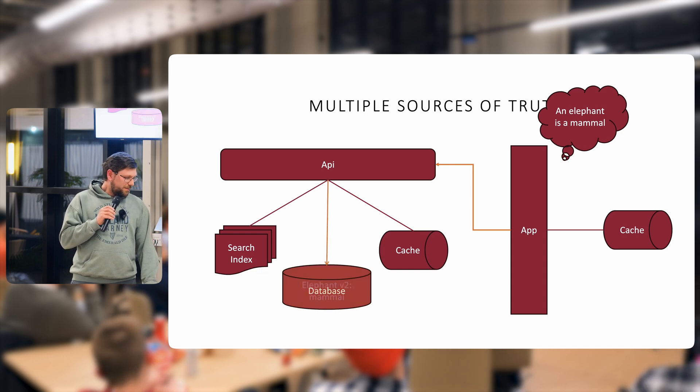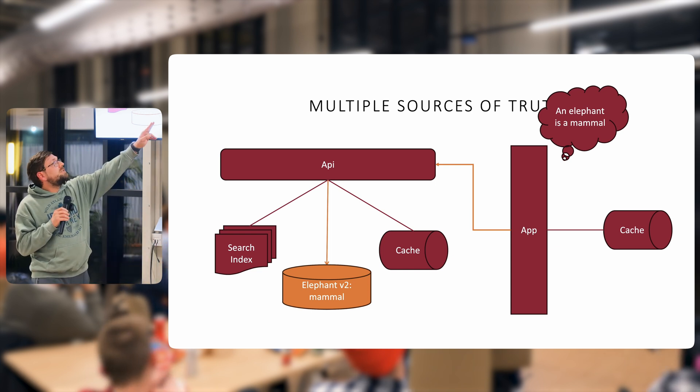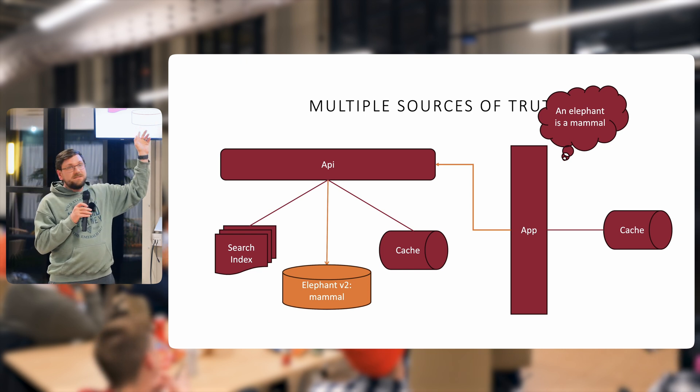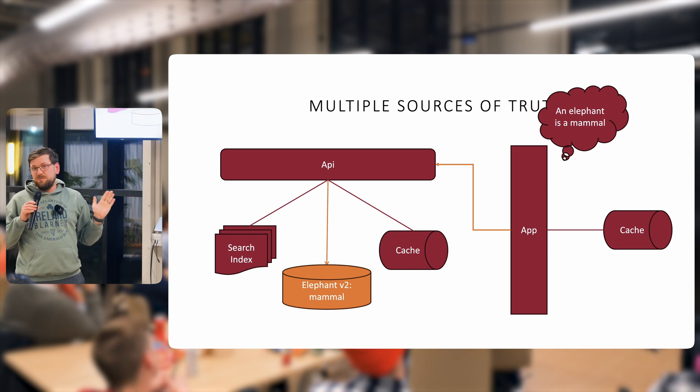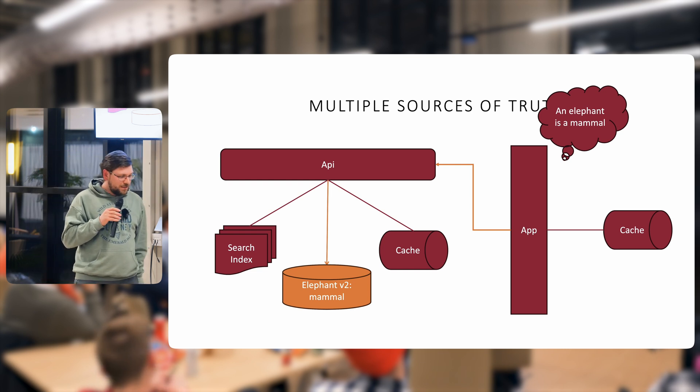We have now changed it so that we're writing a version into our database. It's probably the same row in implementation details, but now we have a mammal and somewhere on that row it says it's a v2.